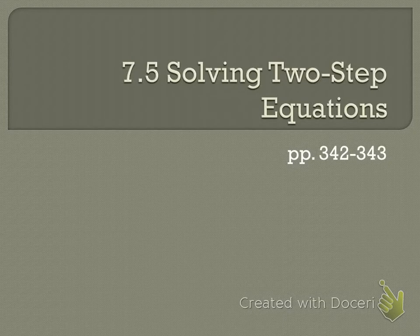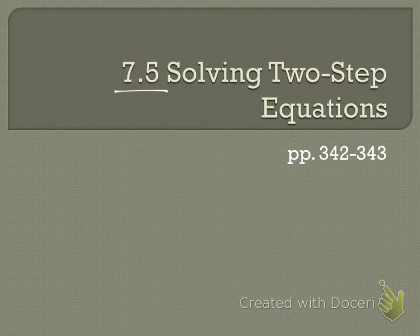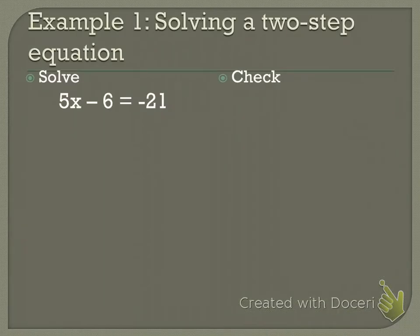Alright, so we're in 7.5, solving two-step equations. We're on page 342 in our books. Example 1, I have this equation: 5x minus 6 equals negative 21.